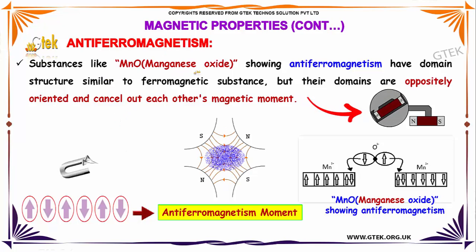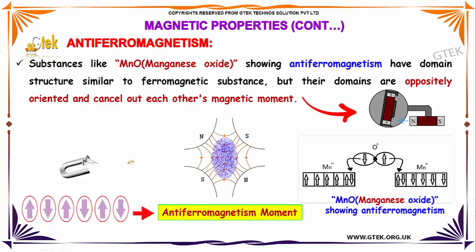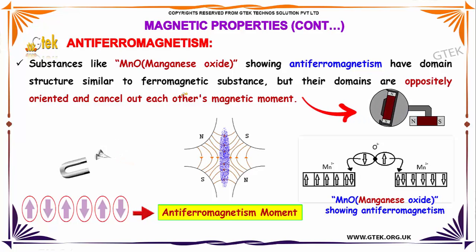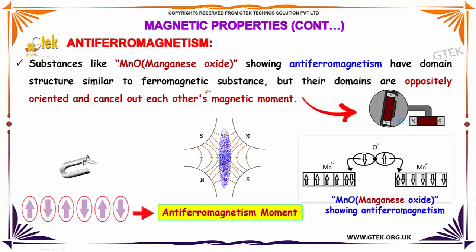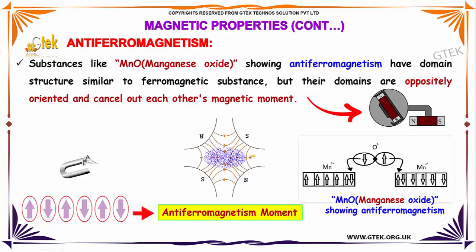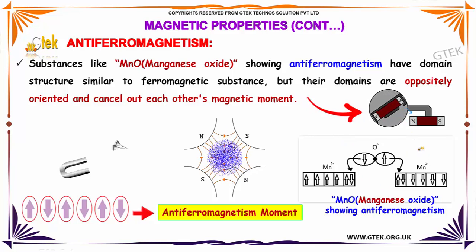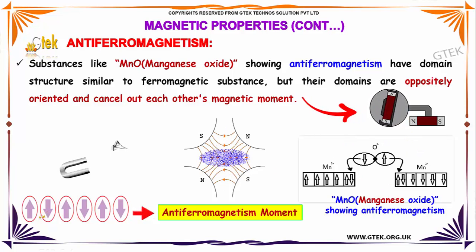A substance like manganese oxide shows antiferromagnetism, which has a domain structure similar to ferromagnetic substances, but the domains are oppositely oriented and cancel out each other. Here is a typical example of manganese oxide showing antiferromagnetism — you are able to see one magnetic moment in this direction and the other one in the opposite direction.